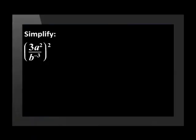Simplify: 3a squared divided by b to the power of negative 3 all raised to the power of 2. According to Bodmas, we first need to work inside the bracket and simplify.